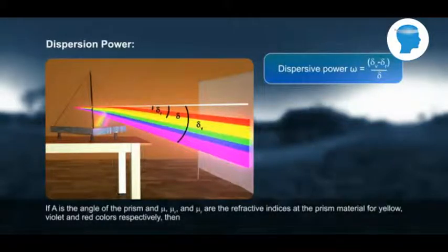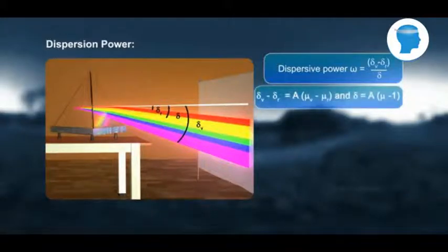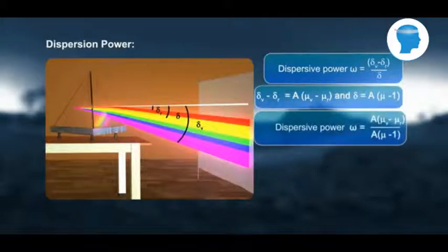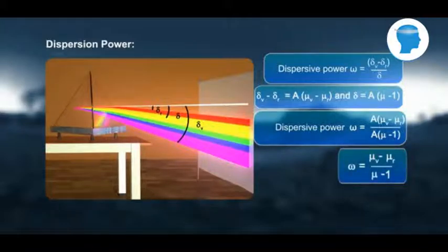If A is the angle of the prism and μ, μ_V and μ_R are the refractive indices of the prism material for yellow, violet and red colors respectively, then δ_V - δ_R = A(μ_V - μ_R) and δ = A(μ - 1). Dispersive power ω = A(μ_V - μ_R) / A(μ - 1). ω = (μ_V - μ_R) / (μ - 1).